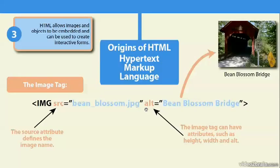Sometimes we have other attributes such as the alt tag. The alt tag is useful if your user turns off graphics in their browser, or if the link gets broken — at least a line of text will appear to tell them what was supposed to show on that page. A more important reason to add an alt tag would be for Section 508 compliance. If someone viewing your content is handicapped and unable to see the images on screen, they use a machine called a screen reader, which would tell them that the beanblossom bridge photo was supposed to appear there.